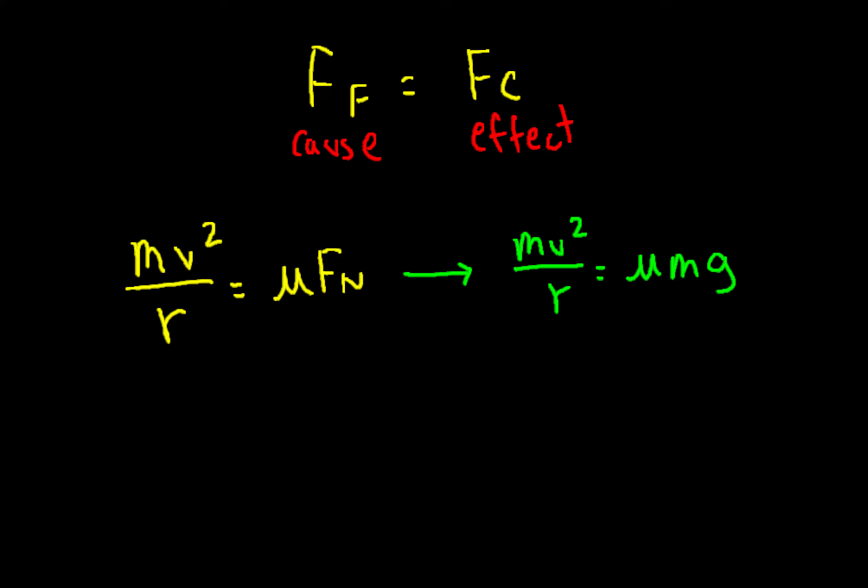So mv² over r equals μmg and notice that m appears on both sides so it can be cancelled out.